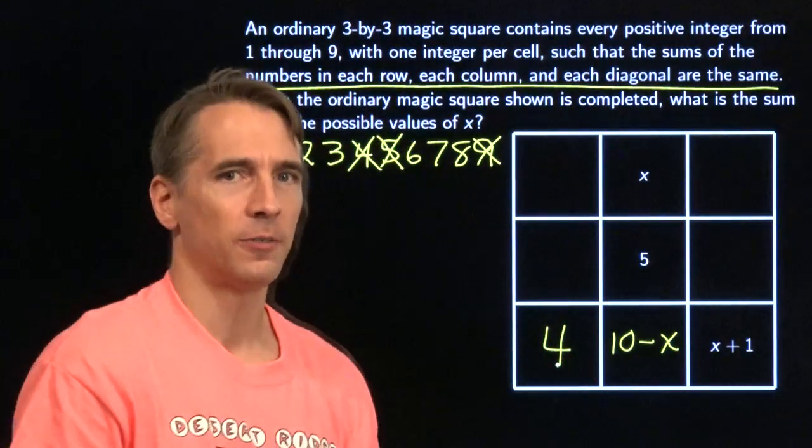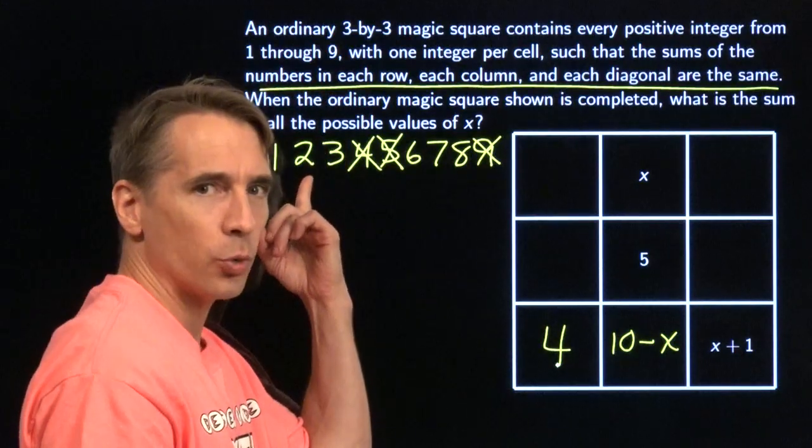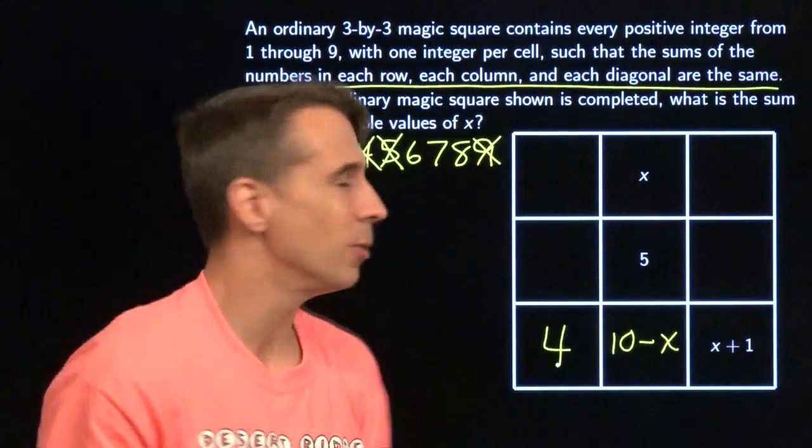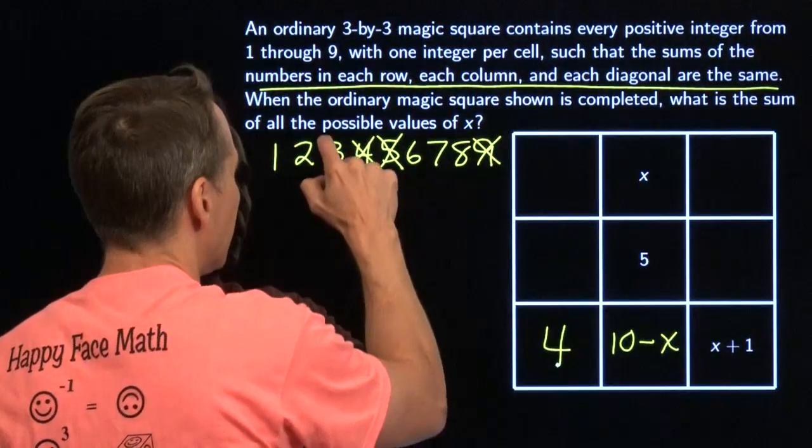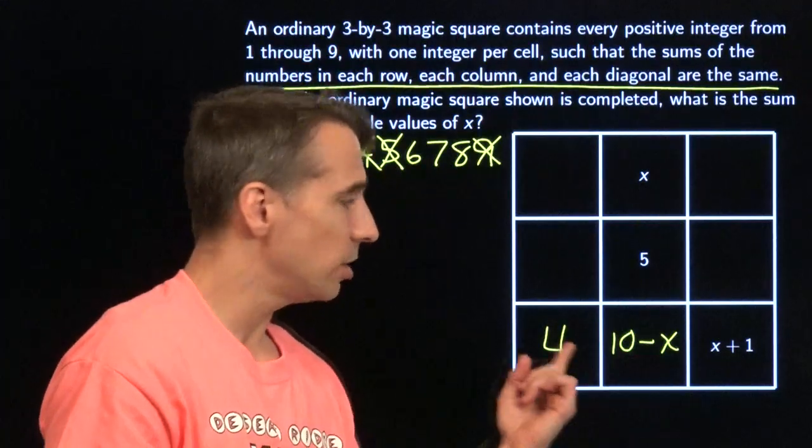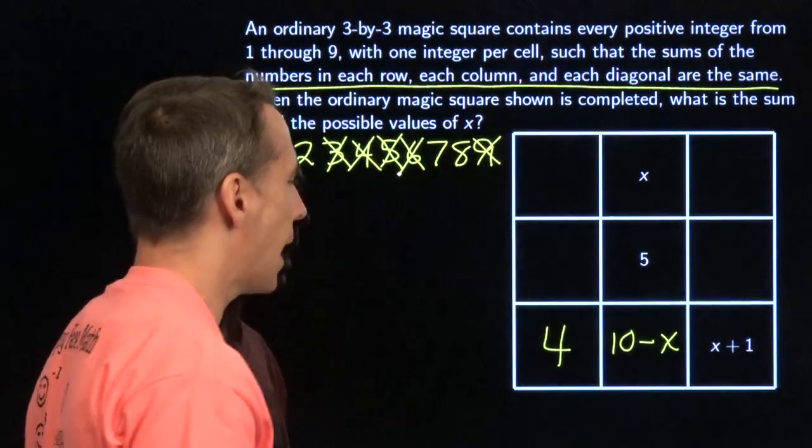And that tells me something right away. x can't be 3. Because if I put 3 in here, 3 plus 1 is 4, I'll have two 4s. That's no good. So x can't be 3. And it can't be 6 either. If I put 6 in here, 10 minus 6 is 4. I'll have two 4s. So 6 can't use that.